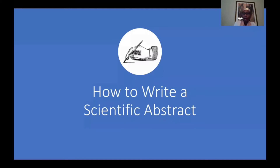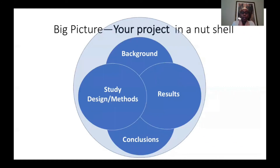So let's talk about how to actually write a scientific abstract. An easy way to understand the task of writing an abstract is to think about it as describing your project in a nutshell. There are four main components: the background, the study design or the methods, the results, and the conclusions. We'll talk about these different components in a few minutes.